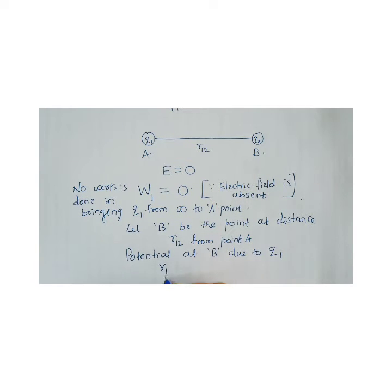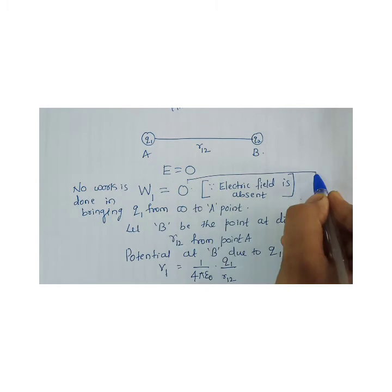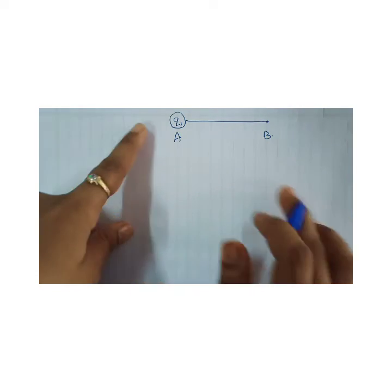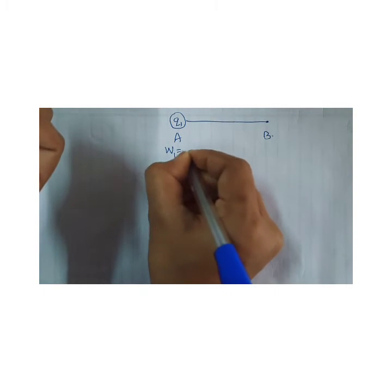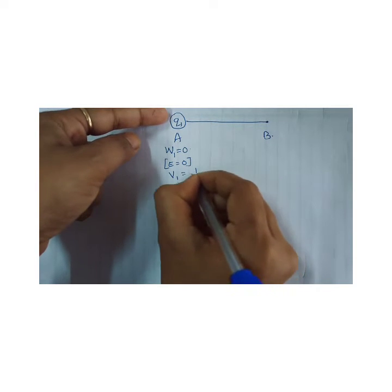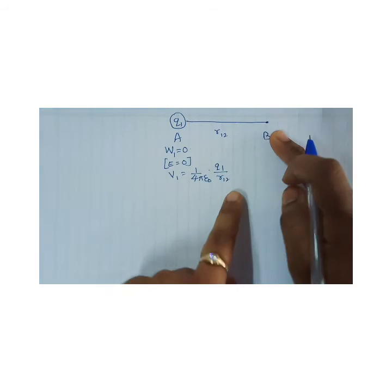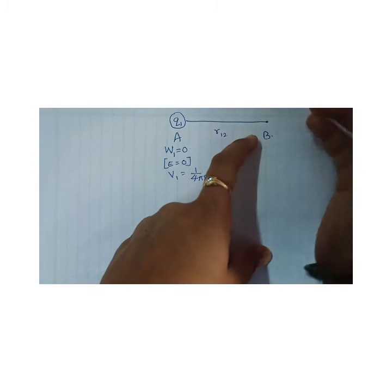So I will take V1 as the potential of Q1 at B. That would be equal to (1/4πε₀) × (Q1 / R12). I will mention W1 = 0 as equation 1, and this potential as equation 2. To summarize what we did: we brought Q1 from infinity and placed it at A; the work done W1 = 0 because electric field is zero. The potential of Q1 is V1 = (1/4πε₀) × (Q1 / R12), where R12 is the distance to point B.